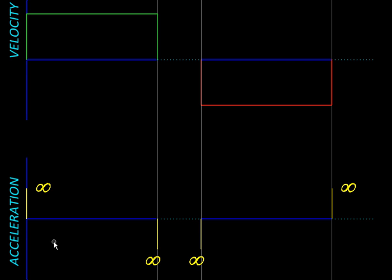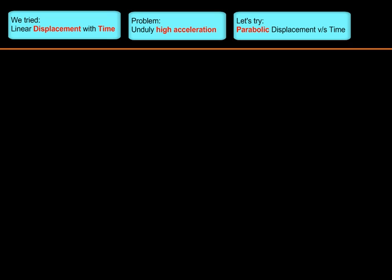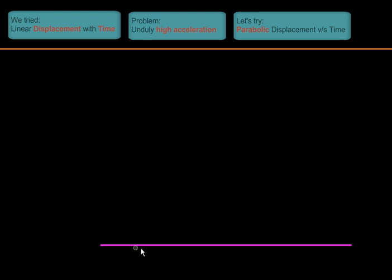Let us try to make some improvement to our displacement against time graph. Since the linear variation did not work, let us try the next degree, so a second degree or quadratic or parabolic variation of displacement against time. We start with plotting the time axis, or you can also imagine this to be the cam angle axis, and we will divide this into equal number of parts, say eight parts.